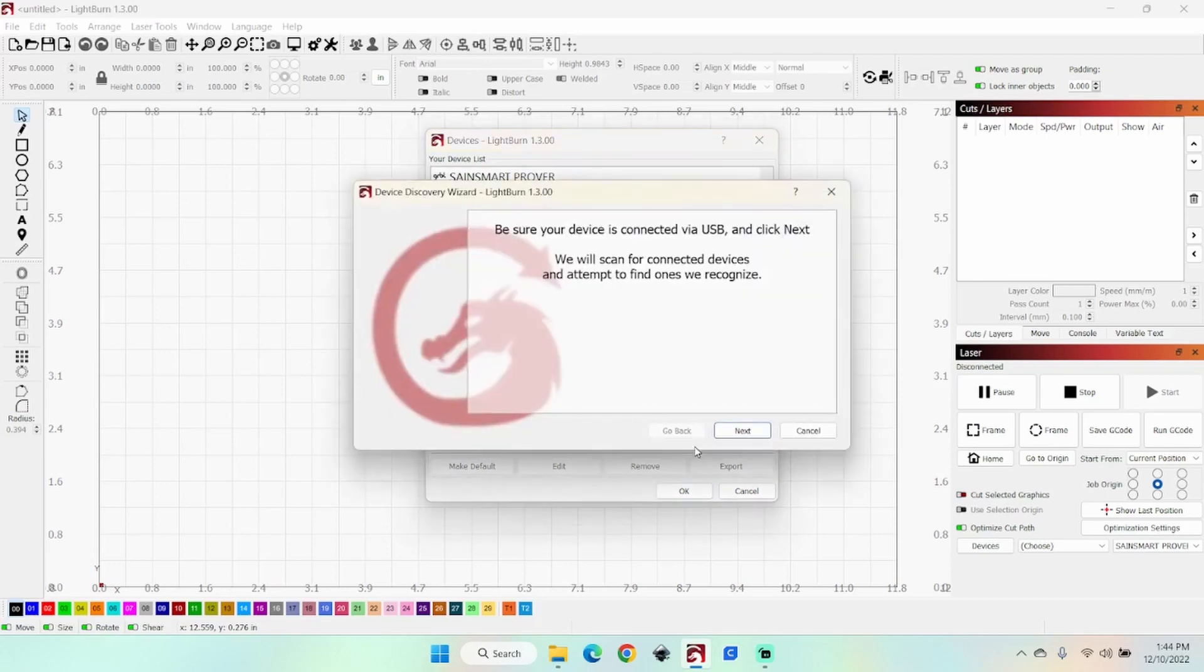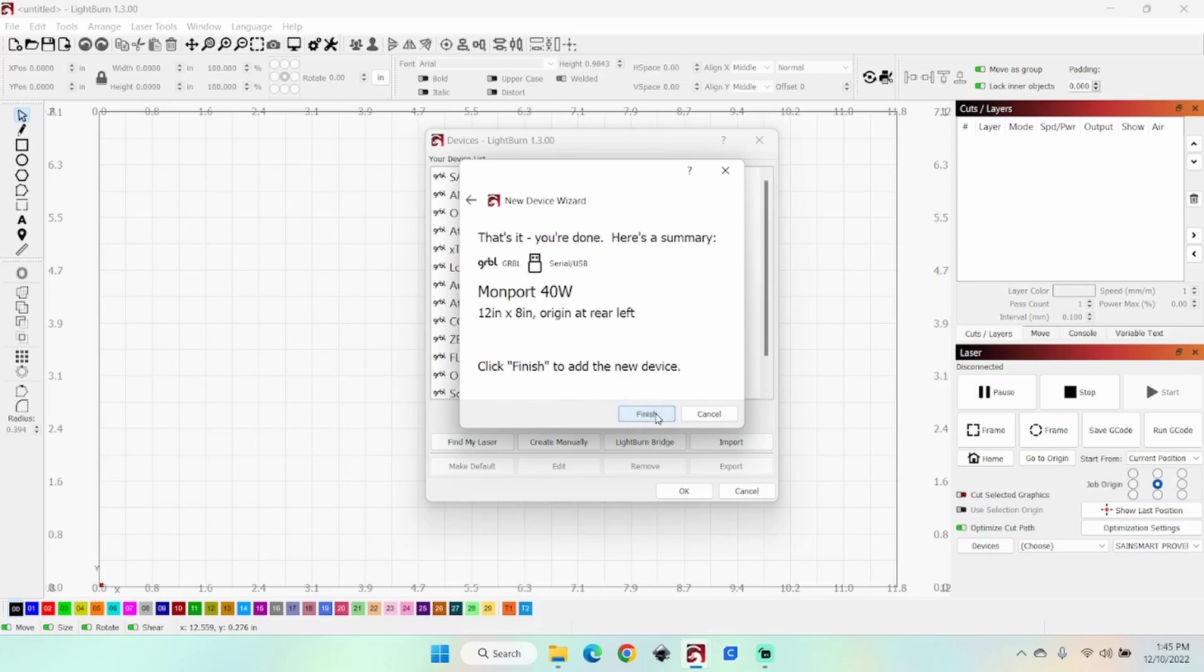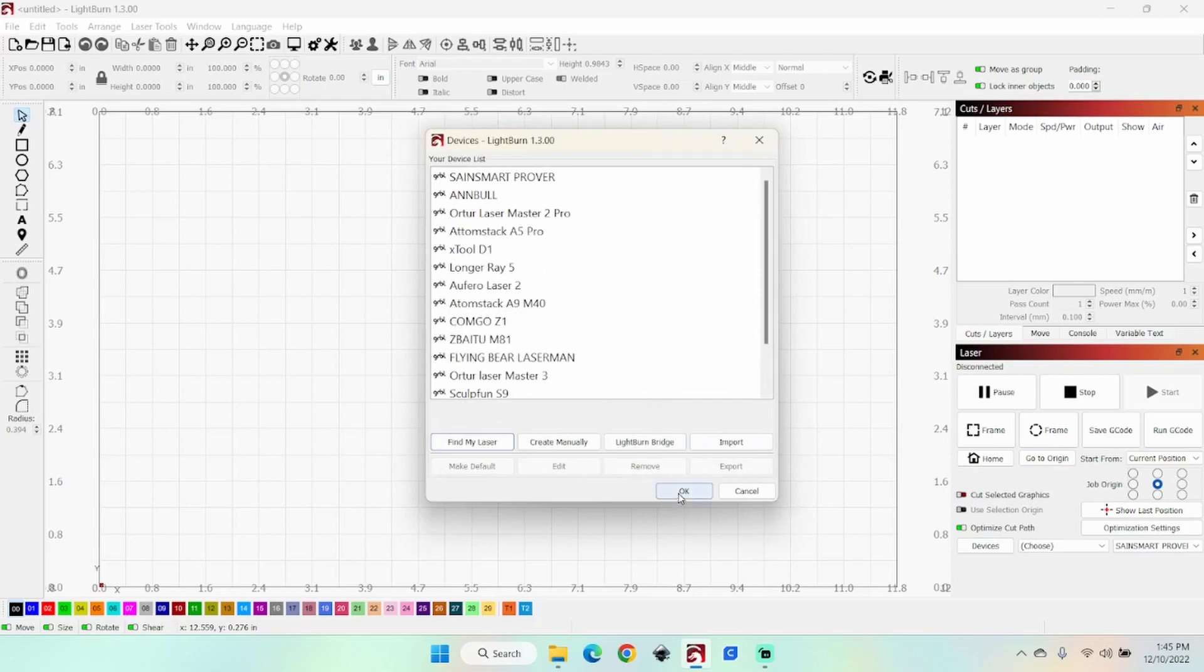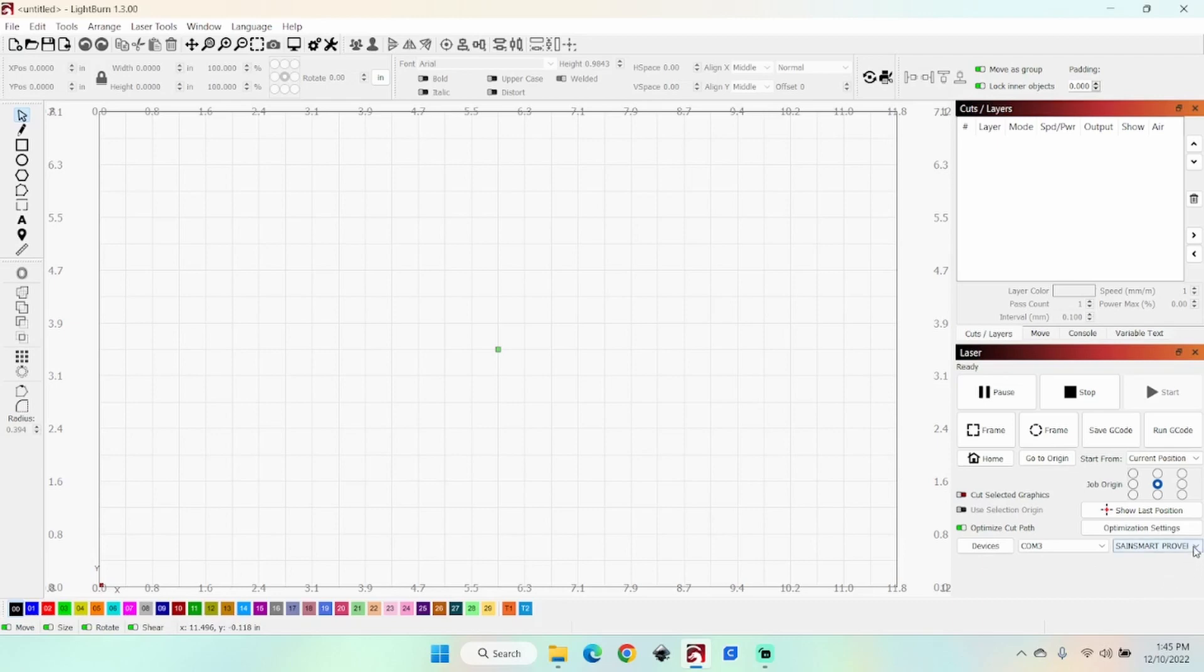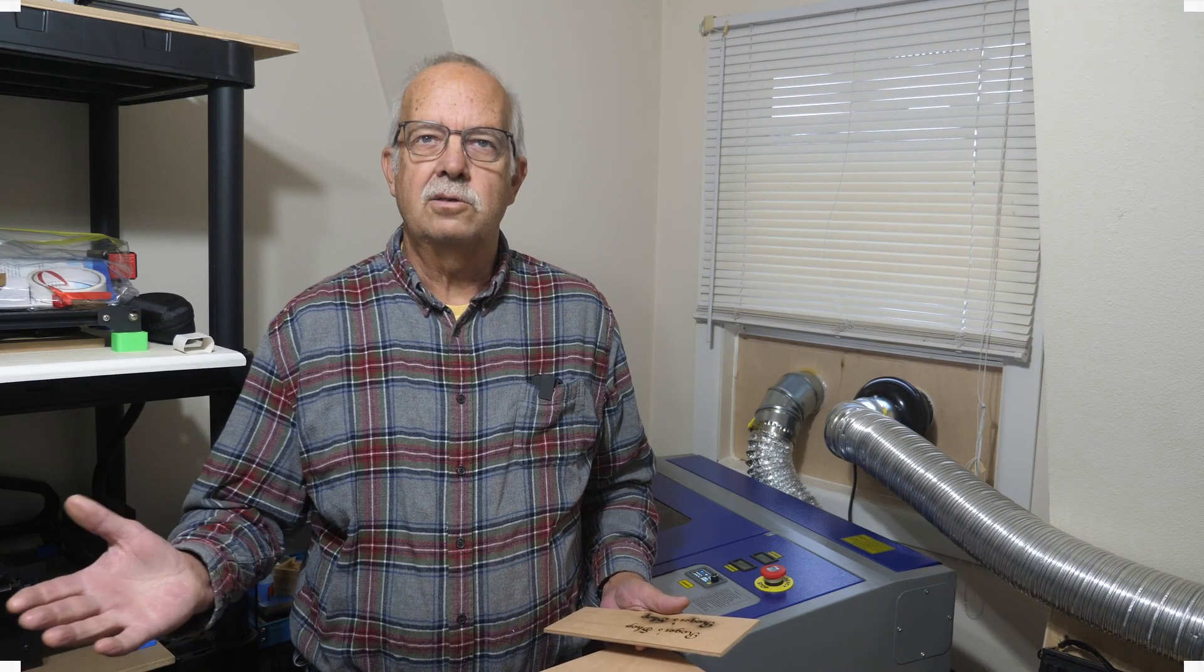Now I can click on devices and then click on find my laser, click on next. It'll do a little searching and there it is. We want to say add device. What we're going to call it: Monport 40 watt. Dimensions of your bed will automatically be added in. Click on next. It homes at the rear left. We want to auto home this on laser startup, click next and finish, then click OK.